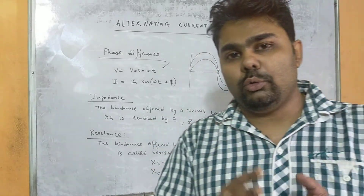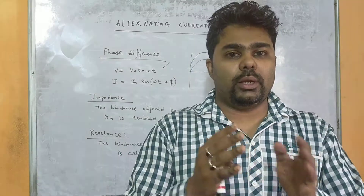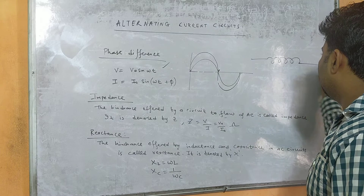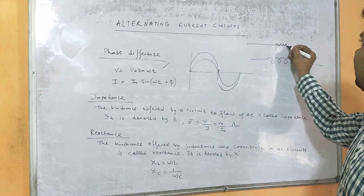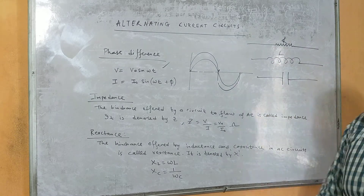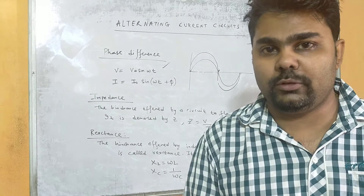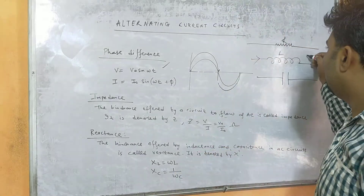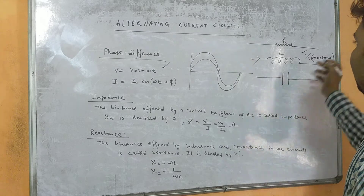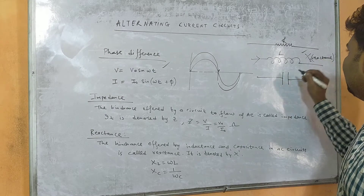The obstruction to the flow of current through a resistor is called resistance. Similarly, when AC current passes through an inductor — inductor means a coil — it will face some opposition. That opposition is called reactance and is denoted by X. The opposition to the flow of AC current in an inductor is called XL, that is inductive reactance. The opposition to the flow of current through a capacitor is called capacitive reactance.